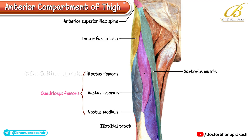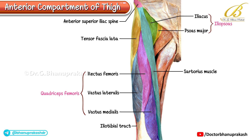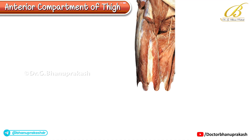Medial to the sartorius, in the upper part of the thigh, lies a short triangular muscle — the iliopsoas. The iliopsoas is a conjoint muscle formed by the iliacus and the psoas major. Upon further dissection, we can now appreciate the deep muscles of the anterior compartment of the thigh.